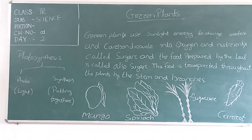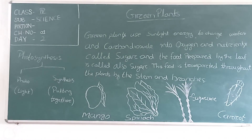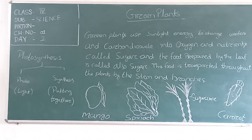A plant contains so many leaves and all plants can prepare food. They prepare a lot of food and cannot use all of it, so they store the remaining food in roots, stem, fruit, flower, etc.